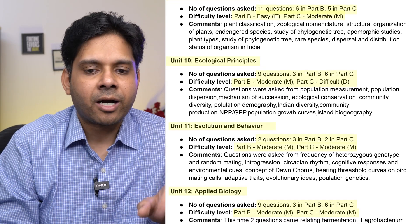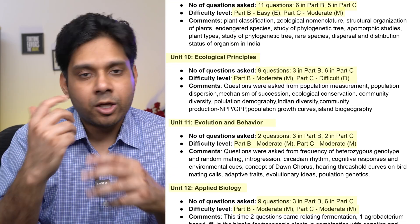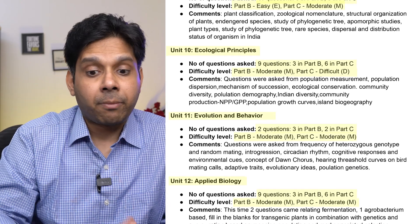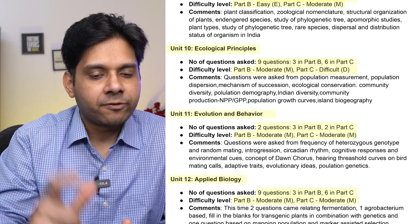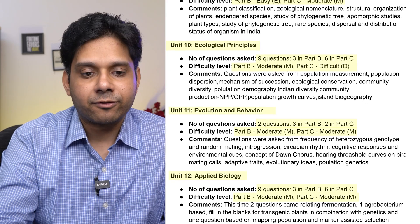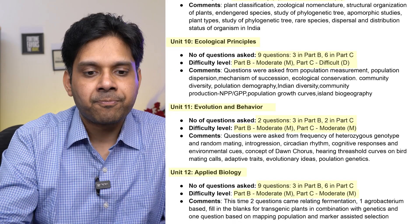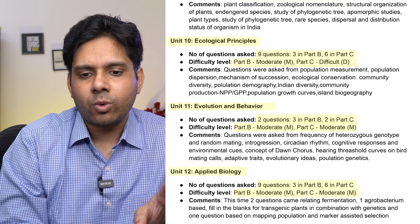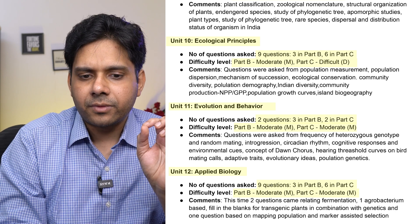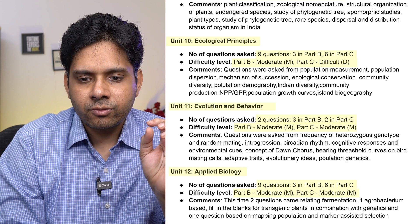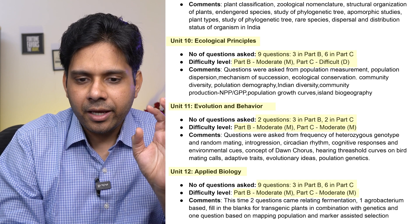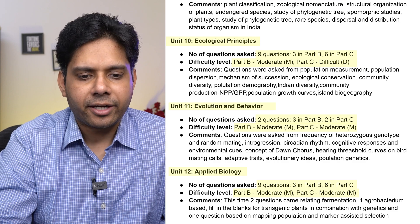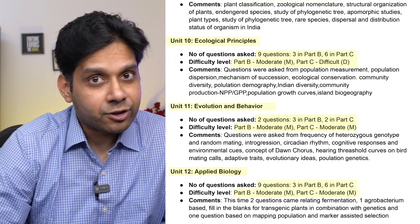Unit 10, Ecological Principles, had nine questions — three in Part B and six in Part C. It is a very important and scoring unit. Part B was moderate and Part C was difficult, so you have to be really careful with ecological principles. Unit 11, Evolution and Behavior, had five questions — three in Part B and two in Part C — and both parts were moderate.